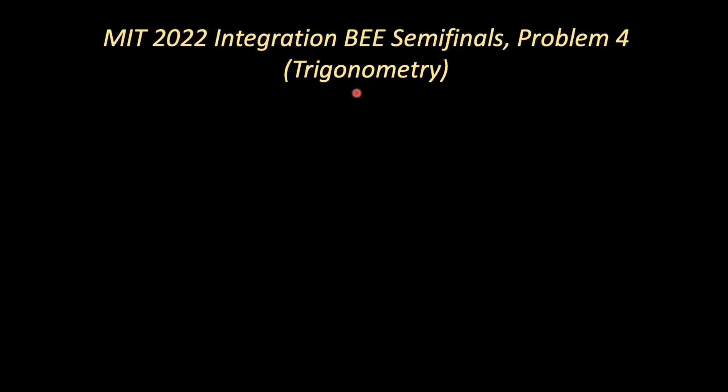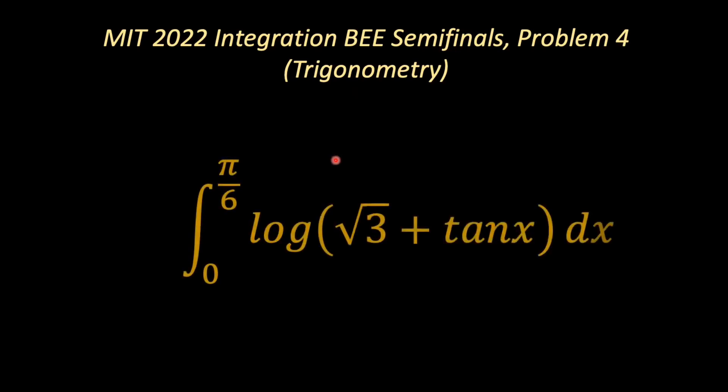The problem is the integration of natural logarithm of root 3 plus tan x integrating from 0 to pi over 6.